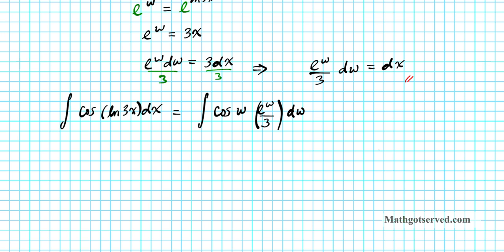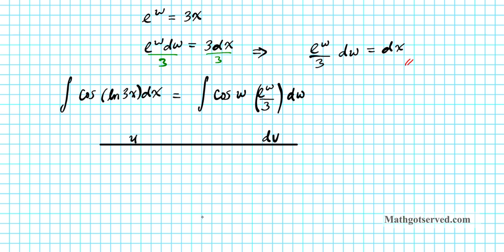Using our LIATE rule, we know that exponentials come before trig. So our U is going to be E to the W over 3, and our dV will be cosine W. I went over this method in detail in my previous installment of this two-part series, so please go back and review that if you don't understand what I'm doing. So U is E to the W over 3 and dV is cosine W.